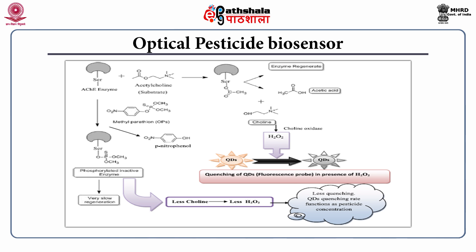Another example of a pesticide biosensor has been based on optical properties. Here, the same phenomenon has been used, but the final output is obtained through an optical transducer. In this case, the production of hydrogen peroxide has been integrated with a quantum dot. Hydrogen peroxide has the ability to quench the fluorescence of this quantum dot. So, the presence of pesticide is directly proportional to the fluorescence of the quantum dot, as higher amounts of pesticide will produce lower amounts of hydrogen peroxide, which will ultimately reduce the quantum dot quenching.